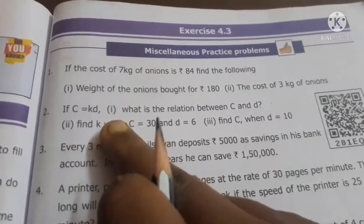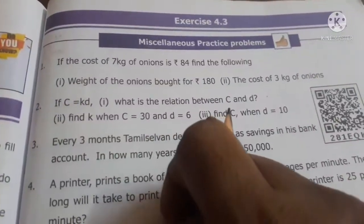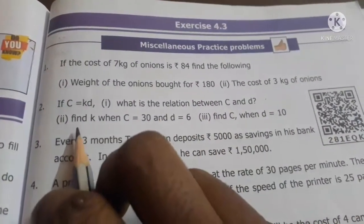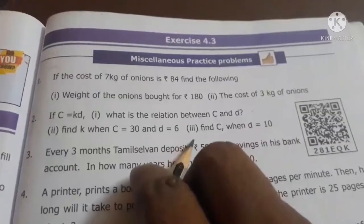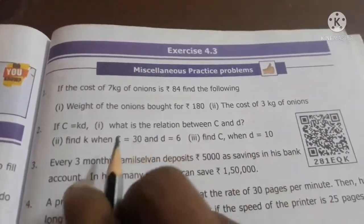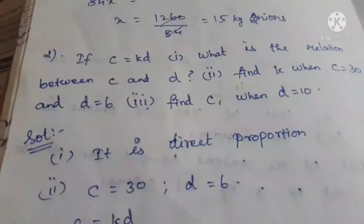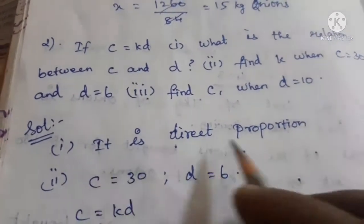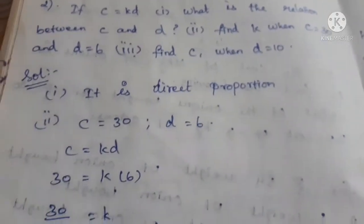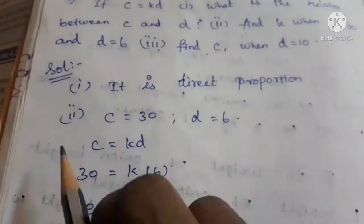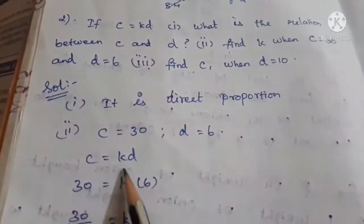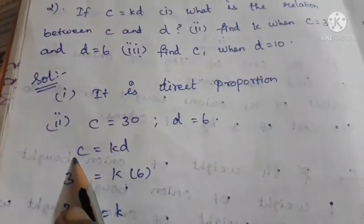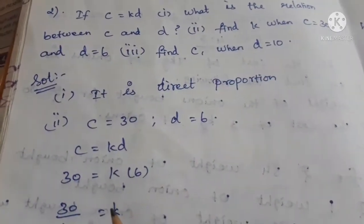Next problem: first part - what is the relation between c and d? Second part - find k when c equals 30 and d equals 6. Third part - find c when d equals 10. First part solution: it is direct proportion. Second part: c = 30, d = 6. Substituting the c and d values in the formula.